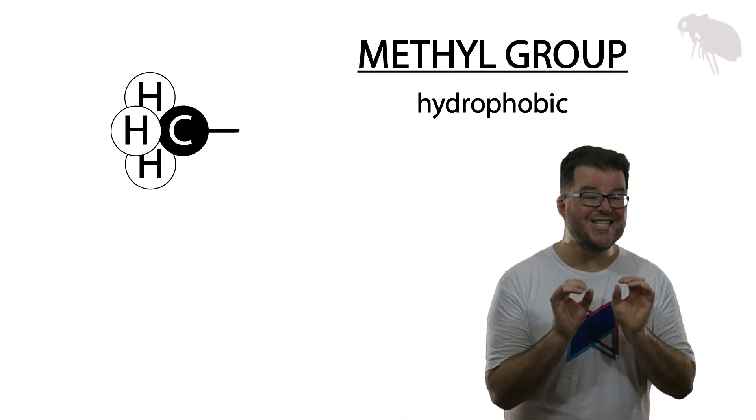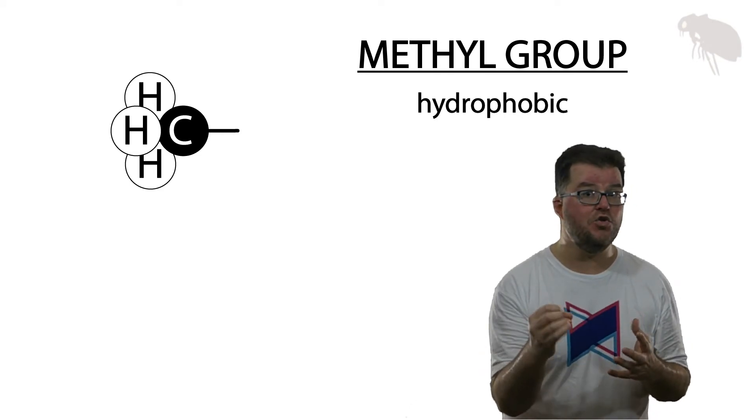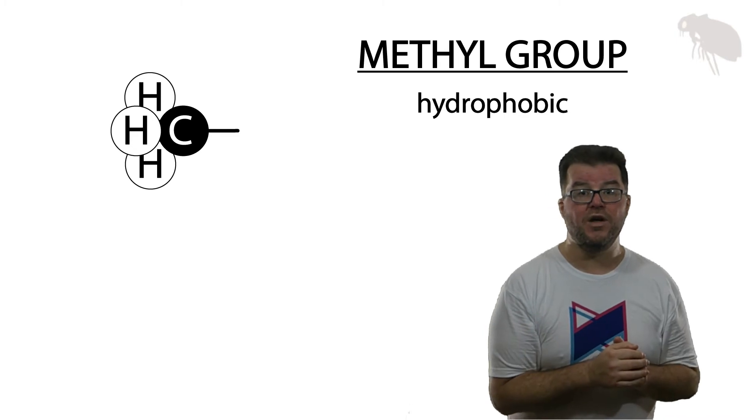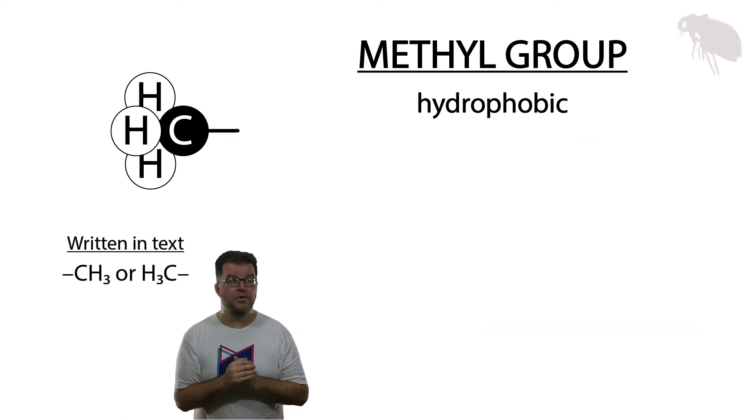When you see functional groups written in text, it's worth thinking about how they're written. Here we have the methyl group written. Keep in mind organic molecules aren't two-dimensional, they're three-dimensional. A functional group can be hanging off of it anywhere in space. It's written CH3 or H3C, and that line there—it's not a hyphen and it's not a dash—it's the covalent bond connecting it to the larger molecule. Carbon can form four covalent bonds total. Three of them in this case are with hydrogen. That means one of them is with the main molecule. So it's either written CH3 or H3C to emphasize the three hydrogens and that the carbon connects.